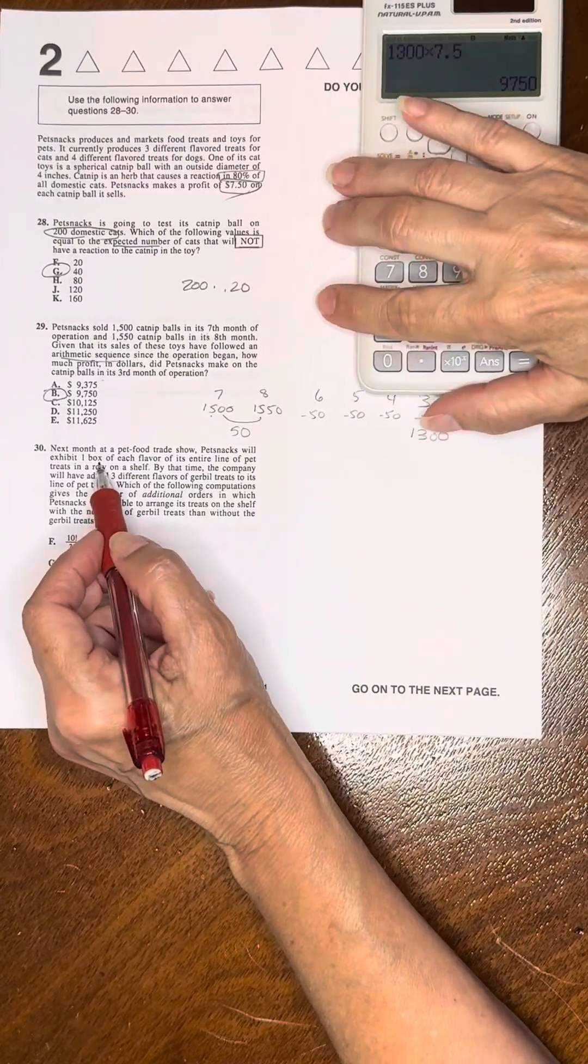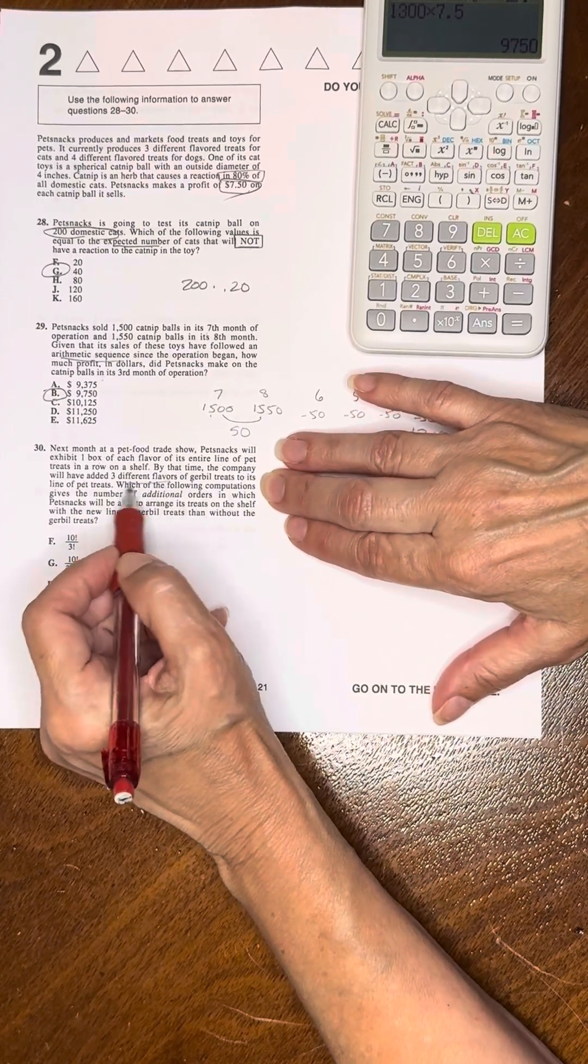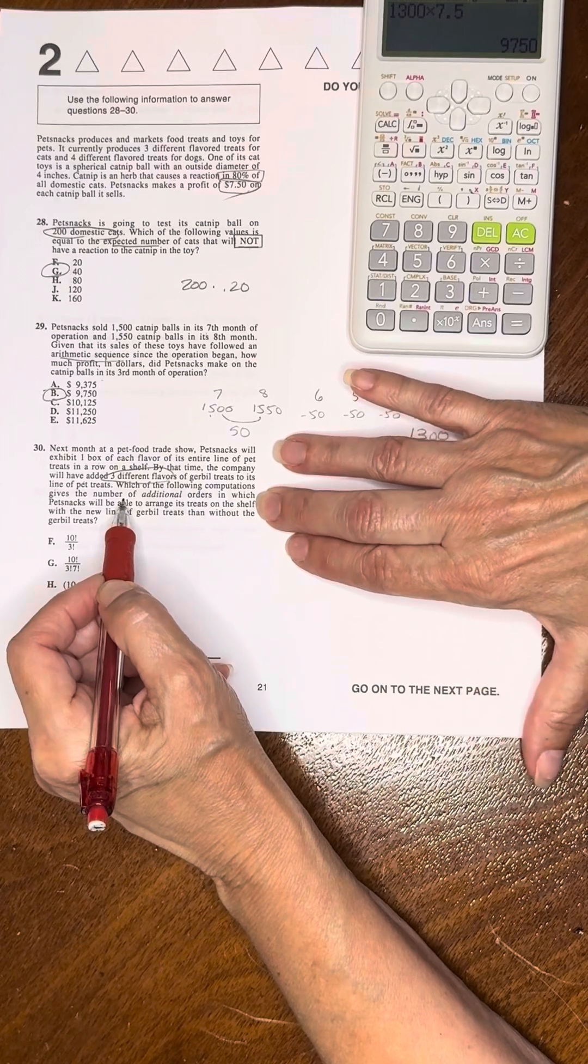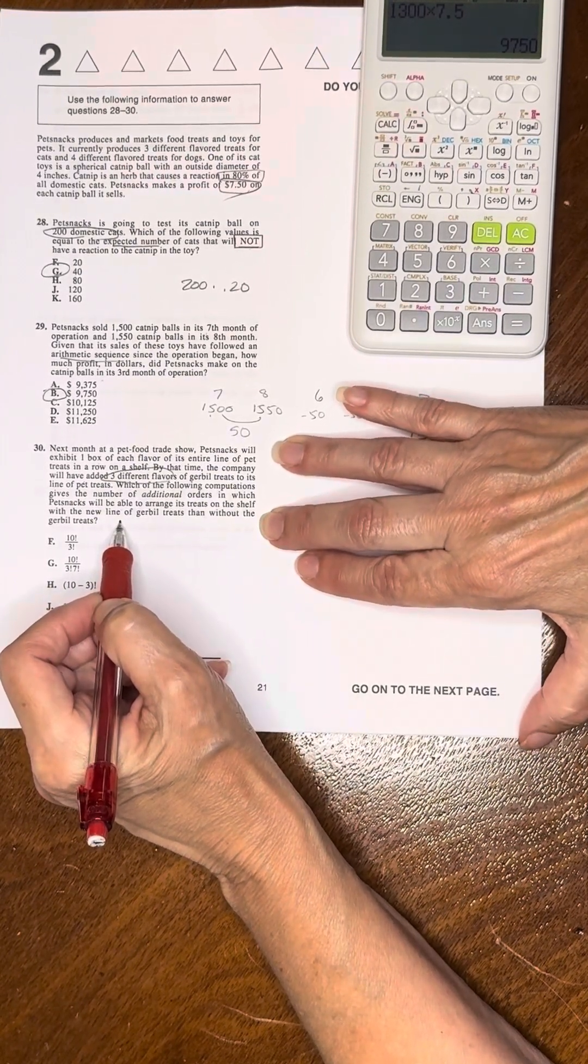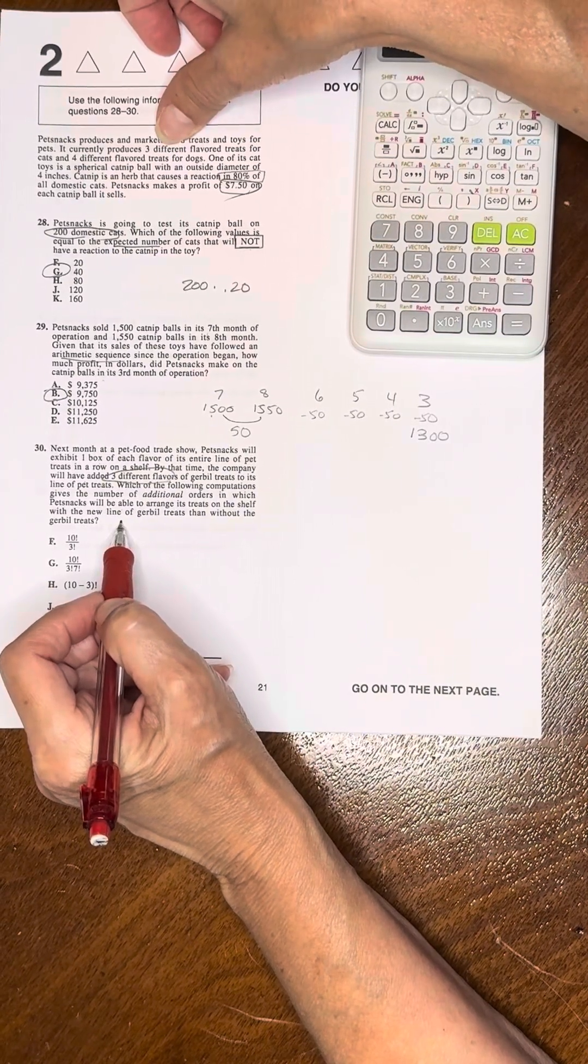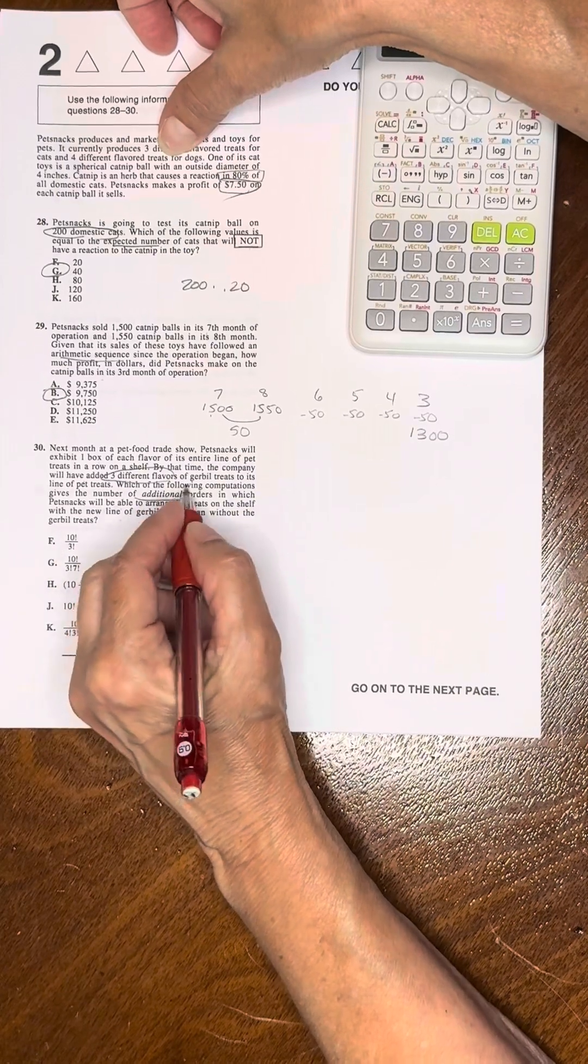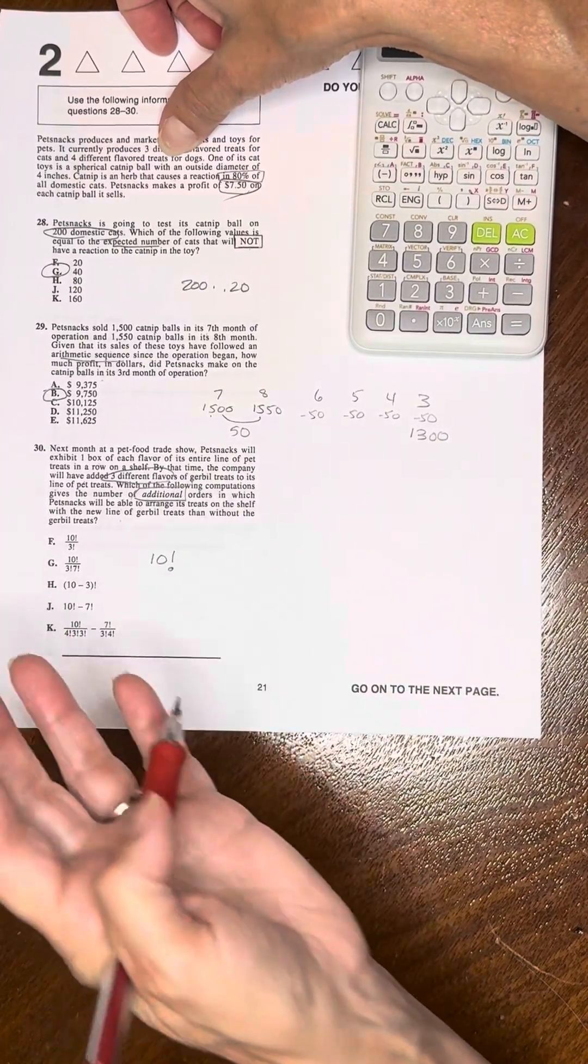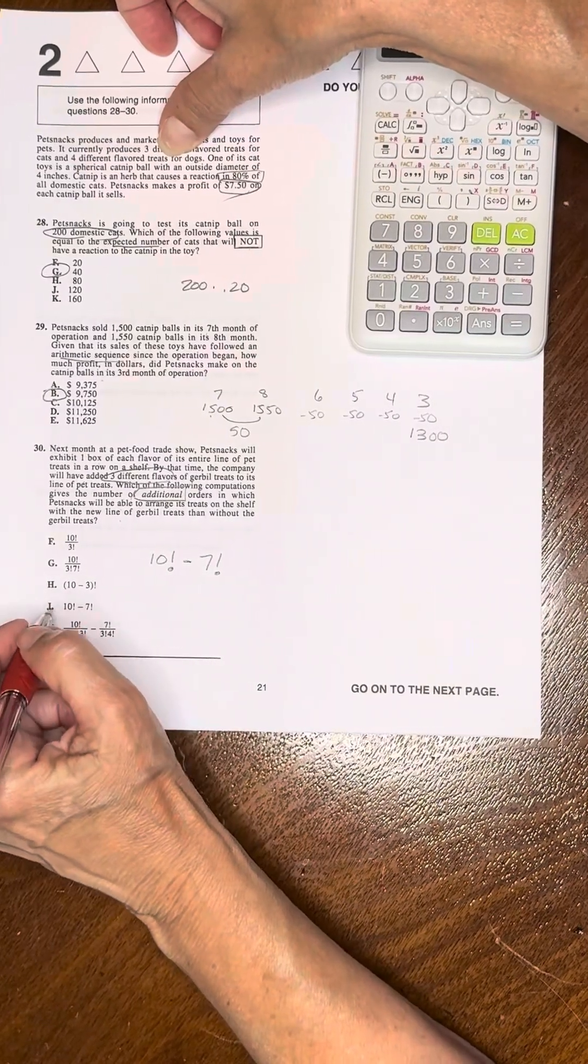Problem 30: Next month, the company will exhibit one box of each flavor, its entire line. By that time, the company will have three different flavors of gerbil treats. Which of the following computations gives the number of additional orders which Pet Snack will be able to arrange its treats on the shelf, given the new line of treats? Right now, she has three different flavors. Currently produces three different flavored treats for cats and four for dogs. So that's a total of seven. And it wants to know how many additional. So she had seven, and now she has 10. It's 10 factorial, 10 times 9 times 8 times 7 times 6 times 5 times 4 times 3 times 2 times 1, minus 7 factorial, how many she had before. So the solution is J.